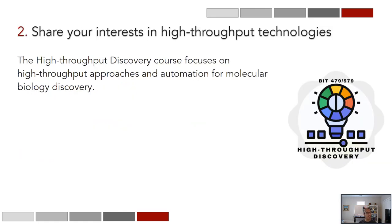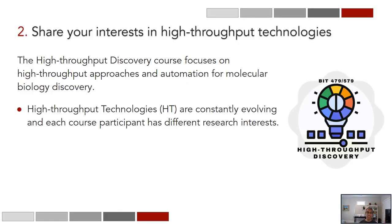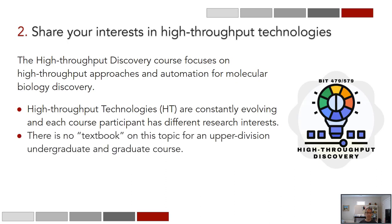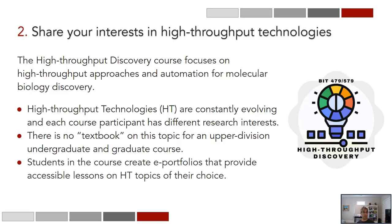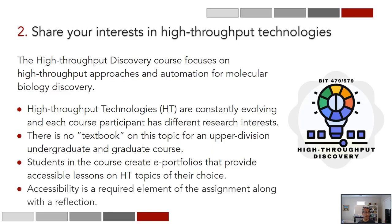The high throughput discovery course focuses on using high-throughput approaches and automation for molecular biology discovery. High-throughput technologies are constantly evolving and each course participant has different research interests. There is no textbook on this topic for an upper division undergraduate and graduate course, and this is a challenge. Students in the course co-create e-portfolios that provide accessible lessons on high-throughput technology topics of their choice, and accessibility — a plus-one way of engaging with the content — is a required element of this assignment, along with a reflection.